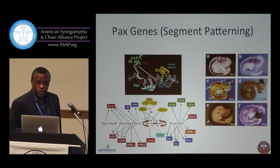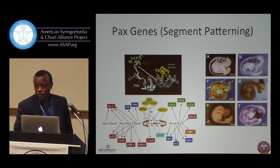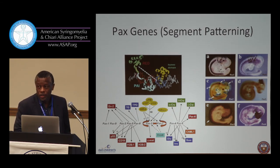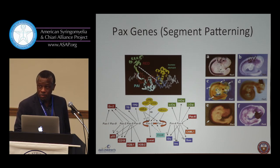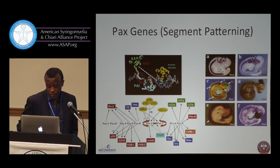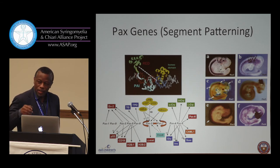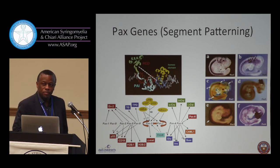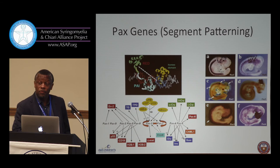I'm not sure if a true Chiari 1 malformation is a disturbance of brain development, because if you disturb brain development you should see other things go wrong within the brain fundamentally. It may be a problem of bone development, but not necessarily brain patterning development, at least in Chiari 1. I'm not particularly convinced that it's a problem of brain development in Chiari 1, even though brain function is affected.